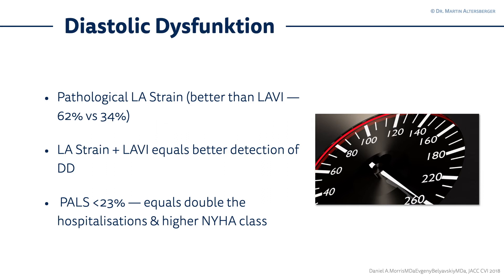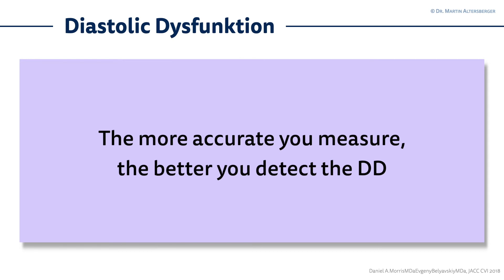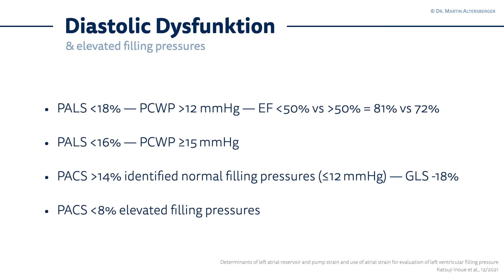If you have a PALS — peak atrial longitudinal strain — below 23%, it indicates more hospitalizations in these patients, even double the amount of hospitalizations, and the patient will be more symptomatic, experiencing more dyspnea. The measurements of PALS and PACS are quite important, but keep in mind to combine these measurements with the left atrial volumetric index. The better and more accurately we measure, the better we get at detecting actual diastolic dysfunction.